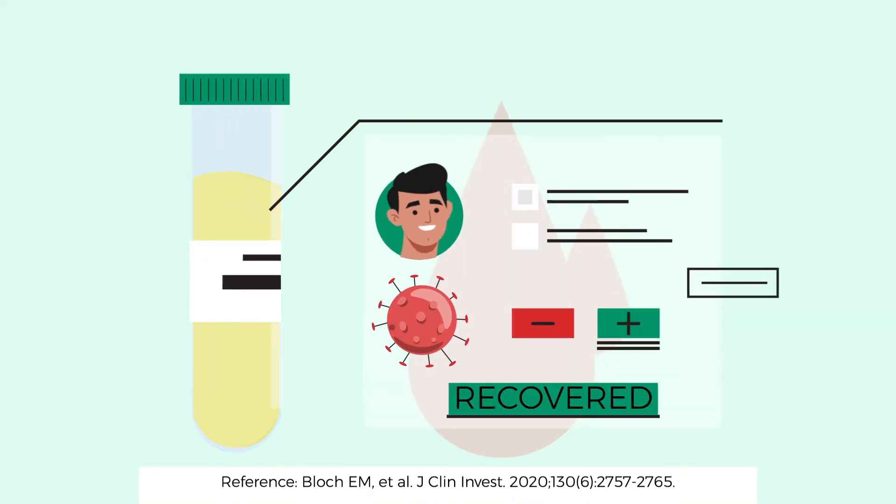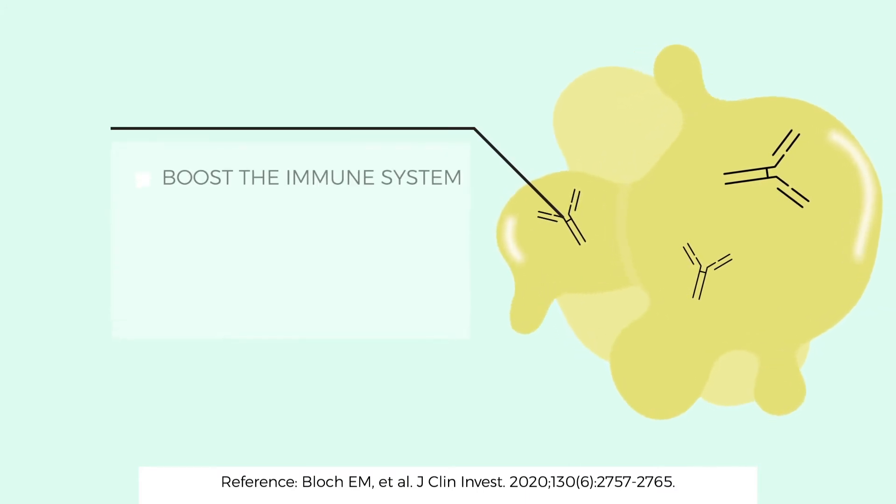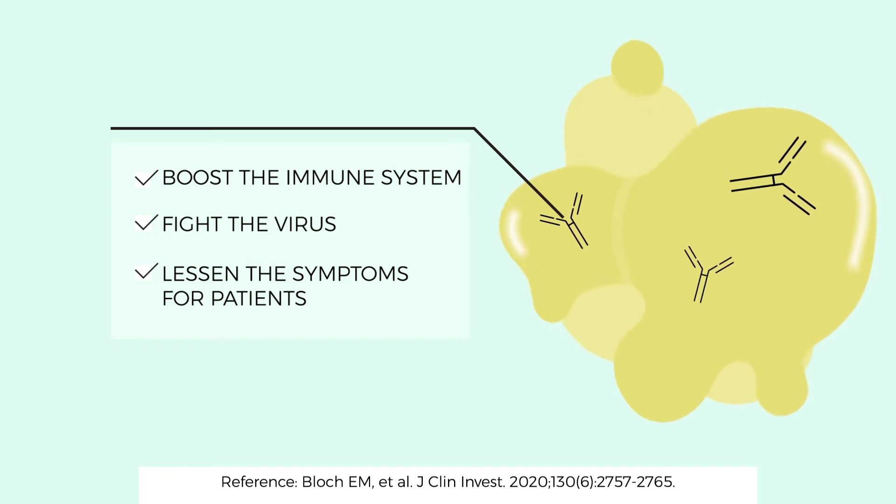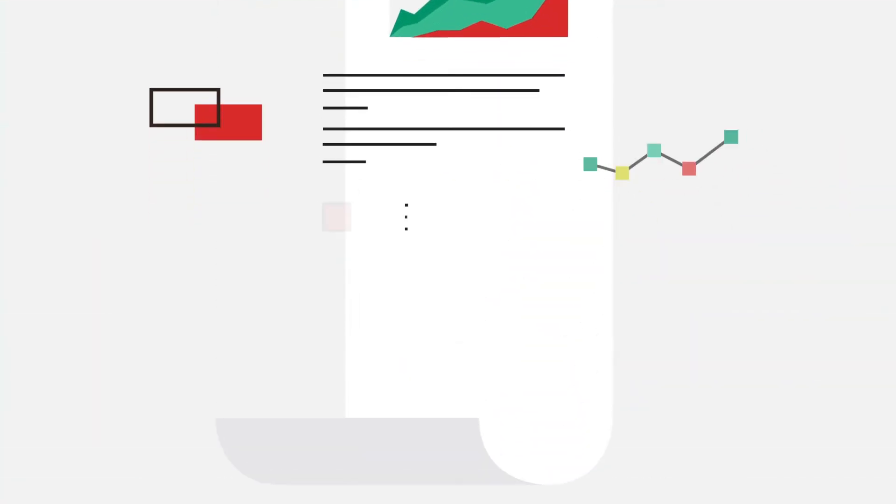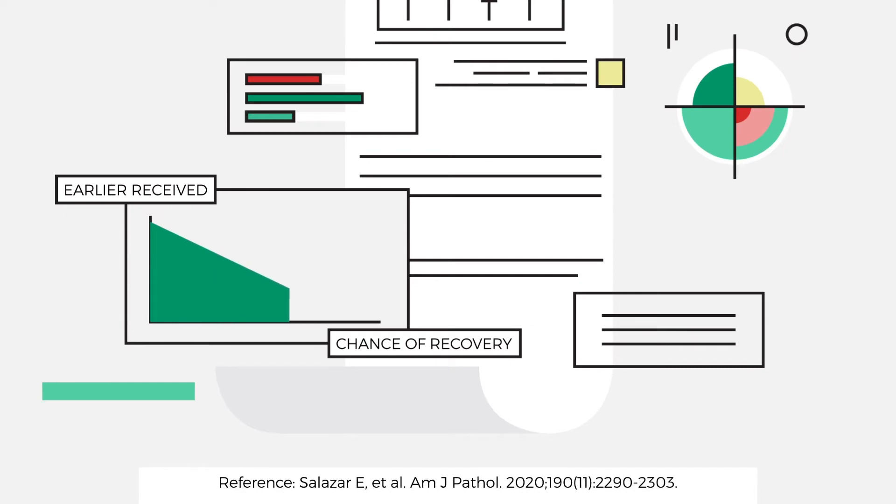Convalescent plasma is plasma donated from people who have already recovered from COVID-19. This plasma contains antibodies that help boost the immune system to fight the virus and lessen the symptoms for patients. Current research suggests that the earlier convalescent plasma is received in treatment, the higher the chance of recovery.